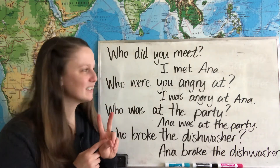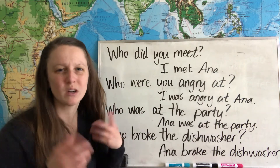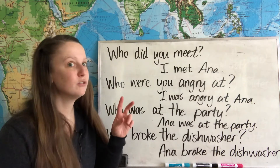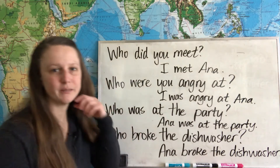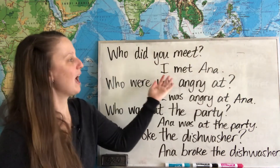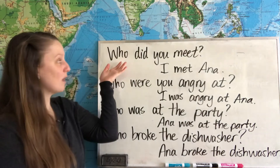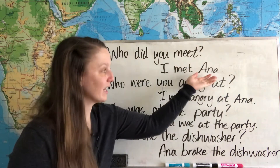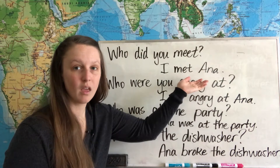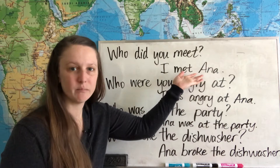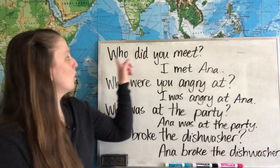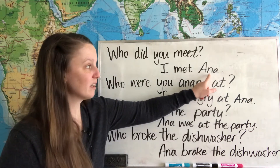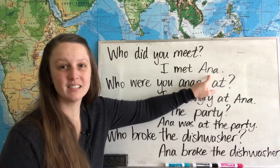Here's the second way — you'll have to figure out which way works better for you personally. The second way is to write the answer to the question. Who did you meet? I met Anna. So the answer to who is Anna. Who did you meet? Anna. I met Anna. Then it's a little bit easier to find the subject and verb. We know that who is replacing Anna, so we're going to find whether Anna is the subject or object.